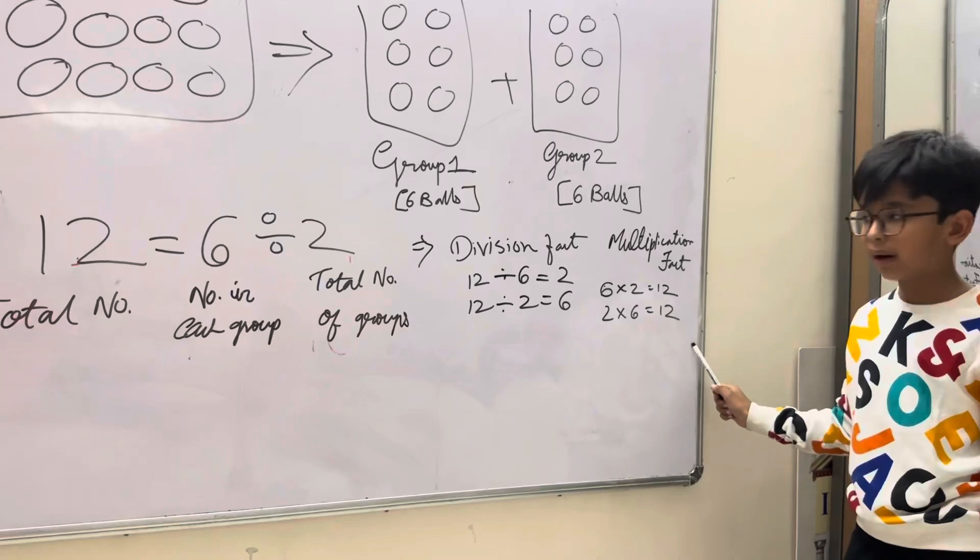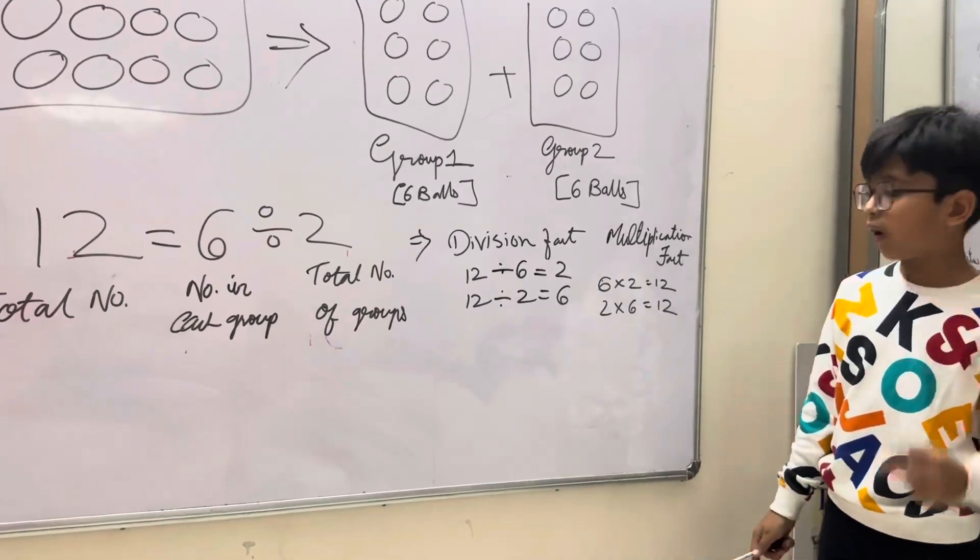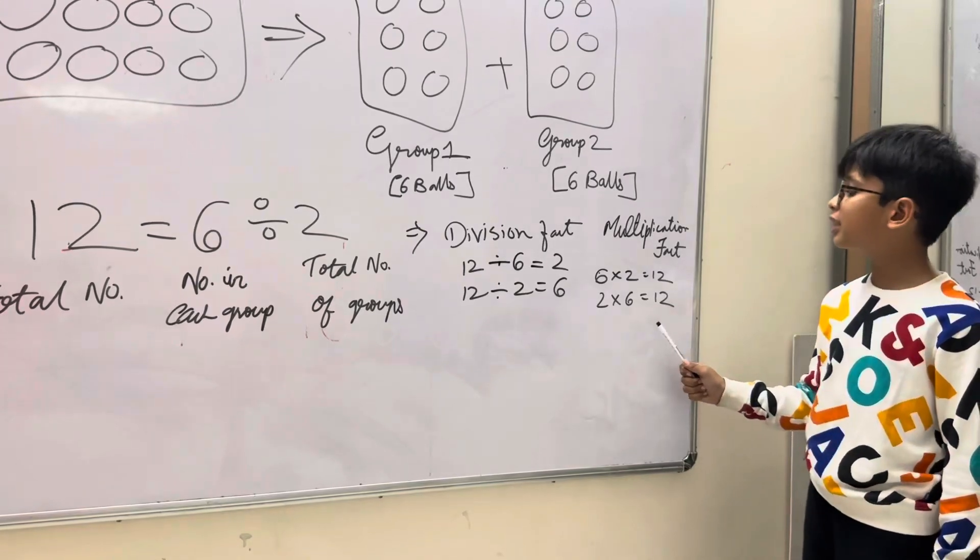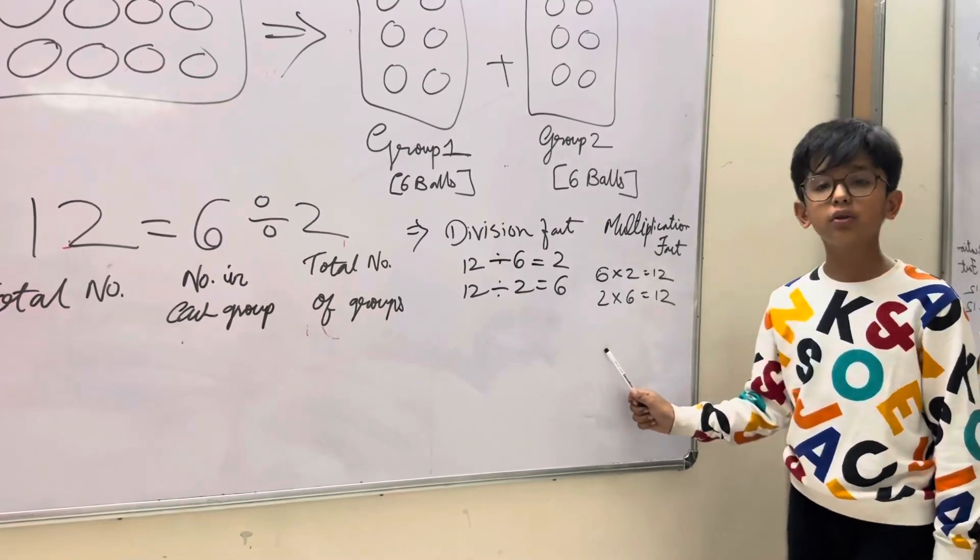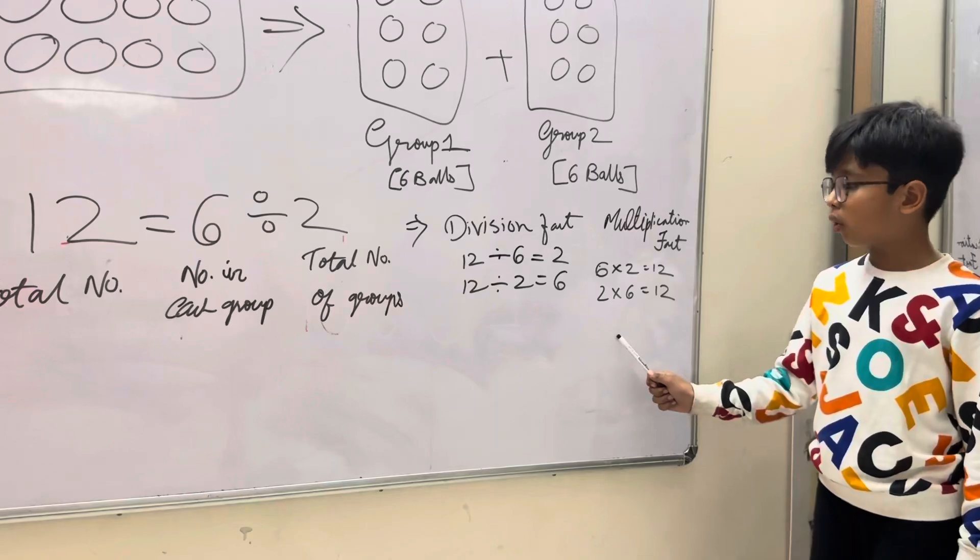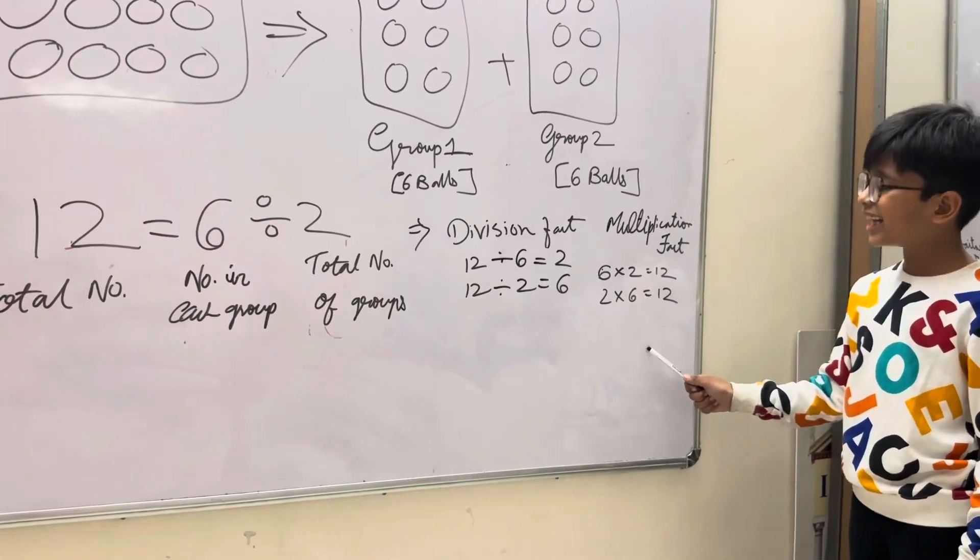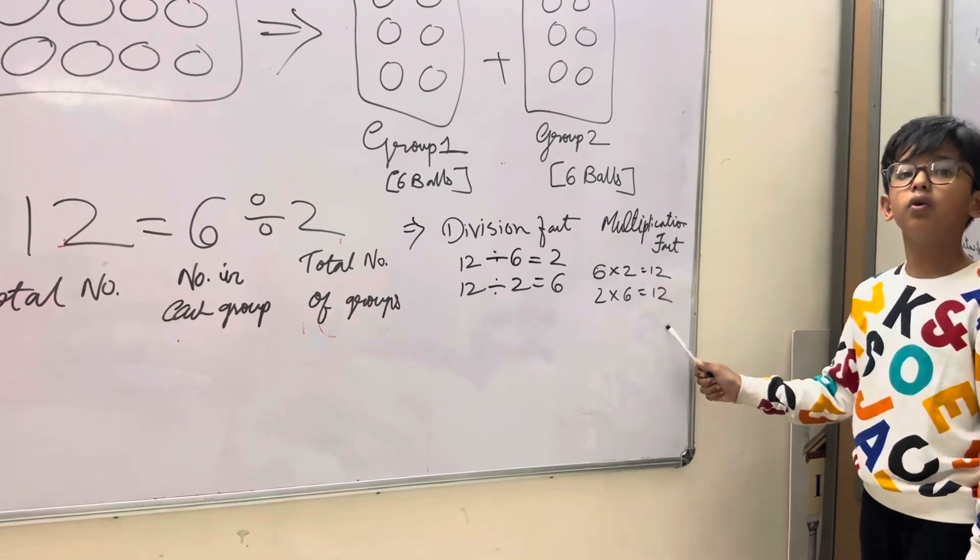And 12 is total number. Now second method for it is 2 multiplied by 6 is equal to 12. Now what is 2? 2 is total number of groups. 6 is number in each group, and 12 is total number.